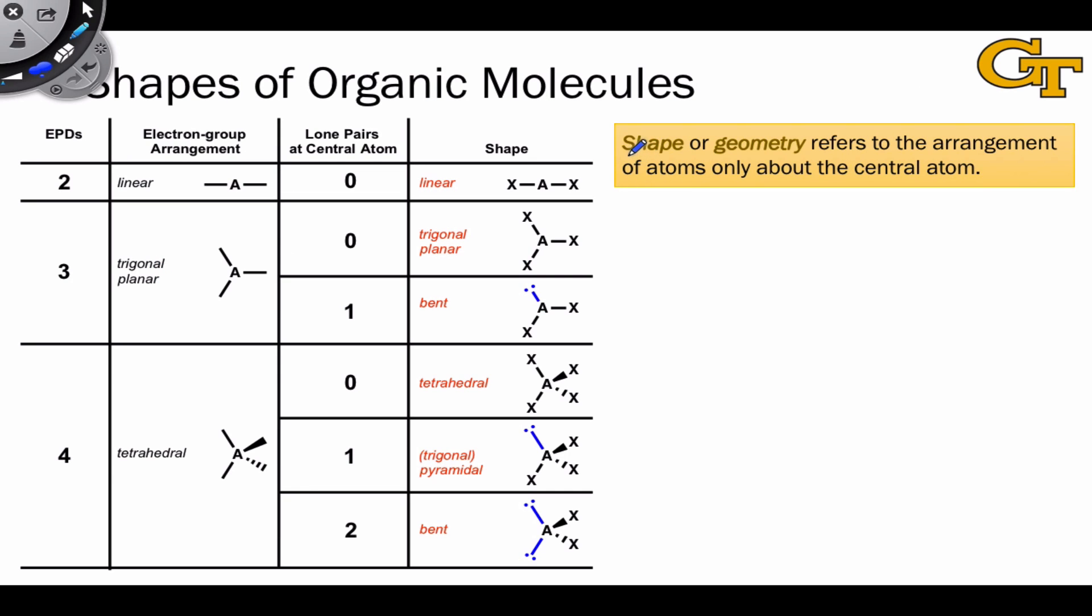What we rigorously call the shape or molecular geometry about a central atom refers only to the arrangement of atoms around the central atom, in a sense ignoring or obscuring the lone pairs and focusing on the positions of atoms only. For the linear arrangement, there's really only one possibility, since if A bore a lone pair instead of one of these X atoms, molecular geometry would be irrelevant. We'd just have a diatomic situation.